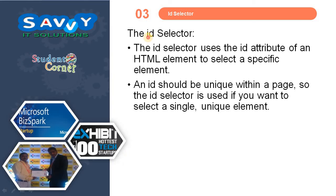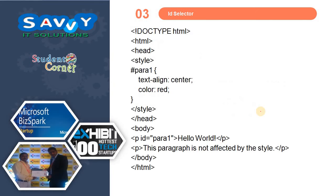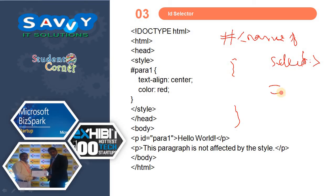The second one is the ID selector. The ID selector uses the id attribute of an HTML element to select a specific element. An id should be unique within a page, so the ID selector is used when you want to select a single or unique element. The ID selector is used with a hash symbol followed by the name of the selector. The attributes defined will be reflected wherever that particular id name is used. For example, defining id 'para1' with text-align center and color red — only the p tag using id='para1' will be reflected; the second p tag without it will not.